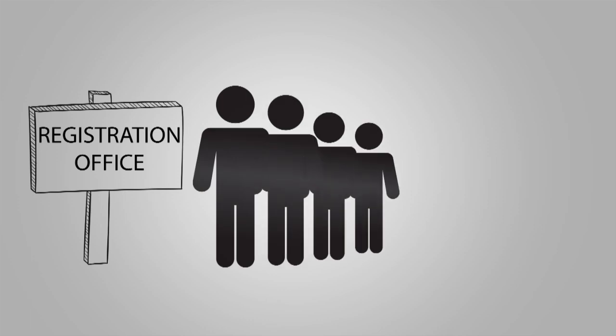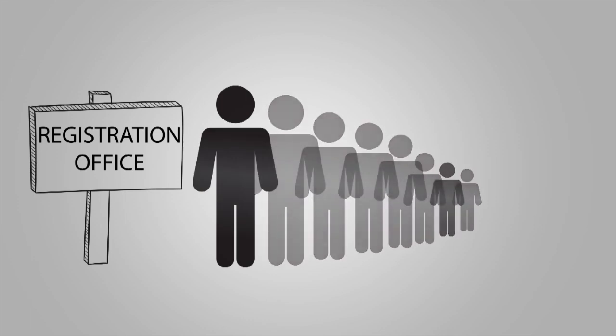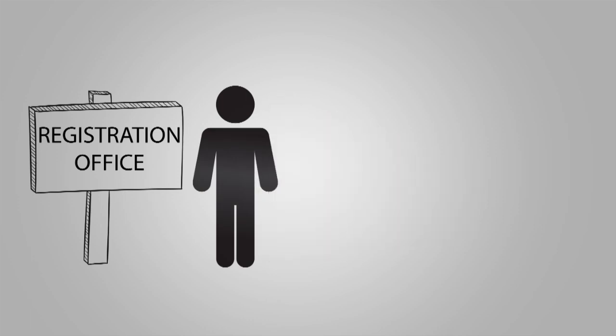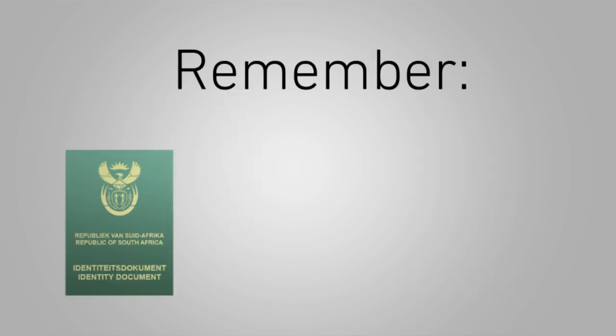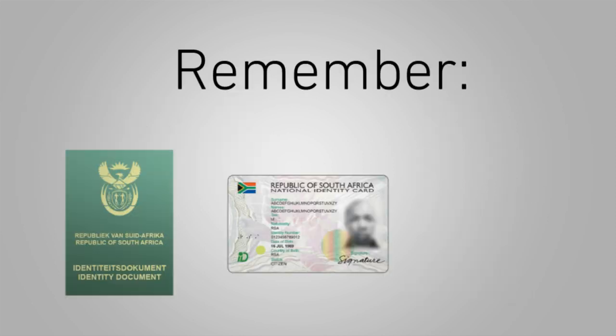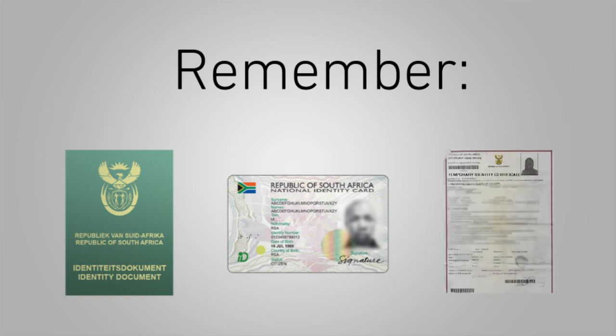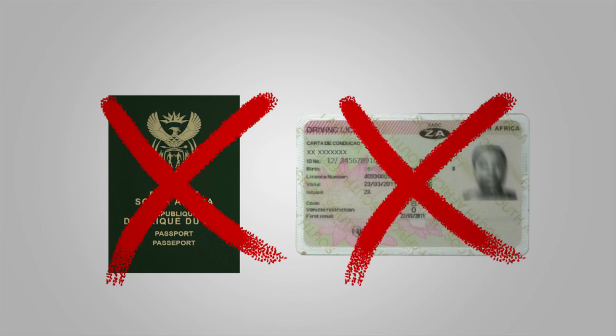To register as a voter in the 2016 municipal elections, this is what you'll need. By law, you must apply in person — no online or email registrations are permitted. You must bring your valid green bar-coded ID book, smart ID, or temporary identity certificate. No other forms of identification are accepted, not even passports or driver's licenses.